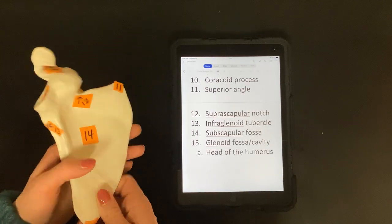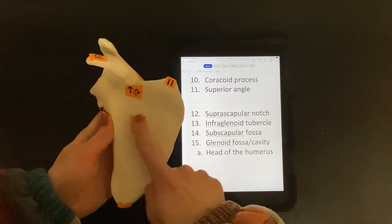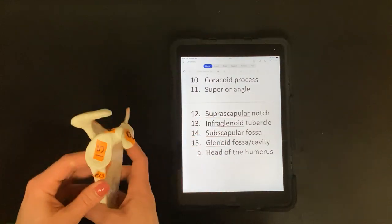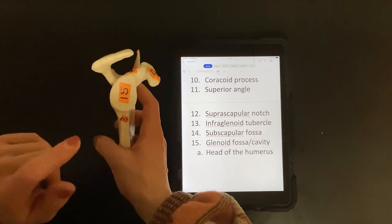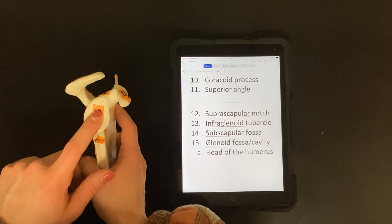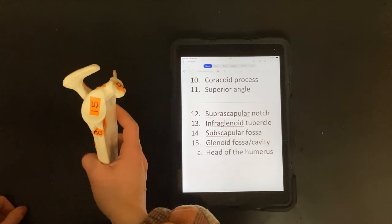Fourteen is your subscapular fossa, this whole thing. Fifteen is your glenoid fossa, or your glenoid cavity. And the head of the humerus articulates with the glenoid fossa.